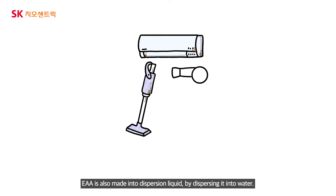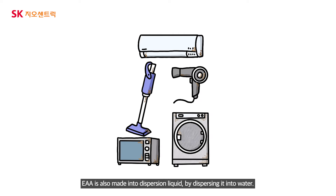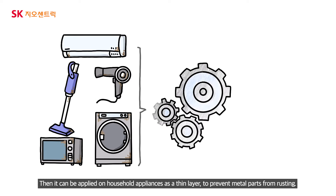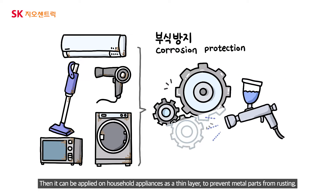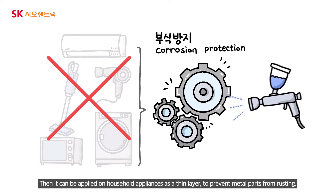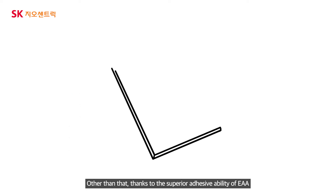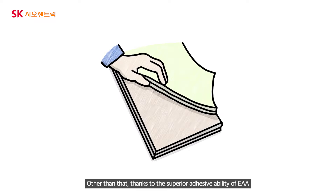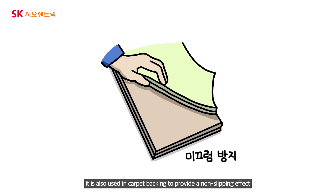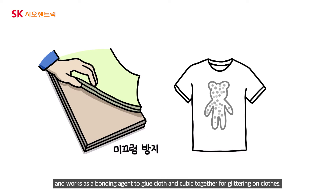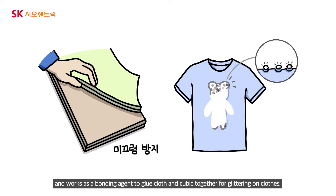EAA is also made into a dispersion liquid by dispersing it into water. It can then be applied on household appliances as a thin layer to prevent metal parts from rusting. Thanks to the superior adhesive ability of EAA, it is also used in carpet backing to provide a non-slipping effect and works as a bonding agent to glue cloth and cubic together for glittering on clothes.